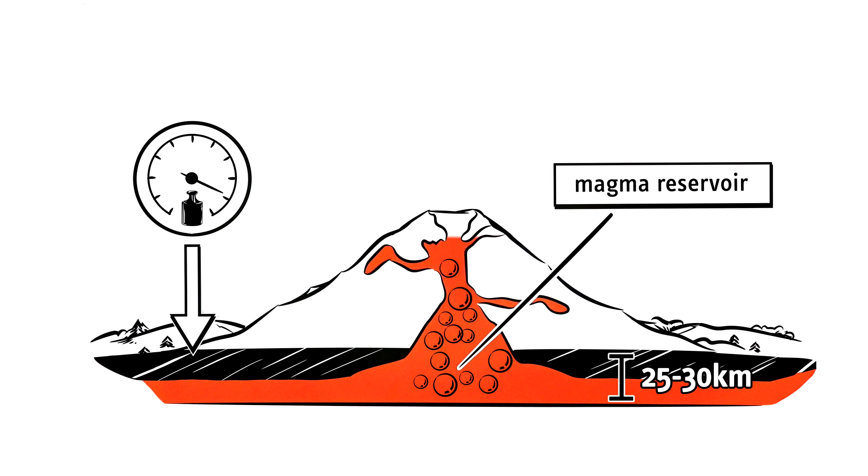They cause the hot mass to froth up and press against the surface. If there's too much pressure, the bubbles burst and the volcano erupts.